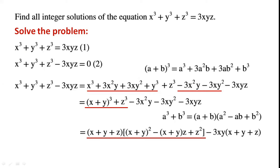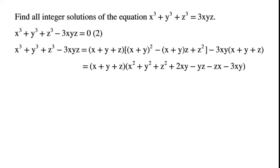The last three terms have a common factor, so we can now write minus 3xy times (x plus y plus z). The two terms have a common factor, so we can now write equals (x plus y plus z) times (x squared plus y squared plus z squared).